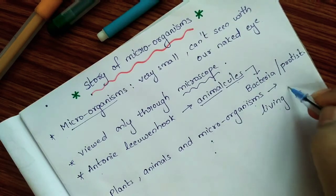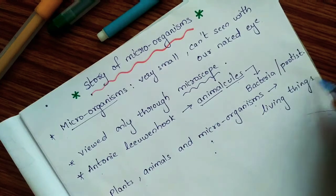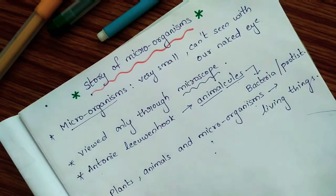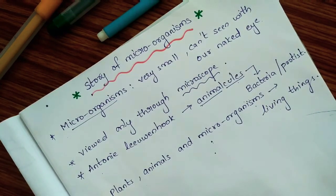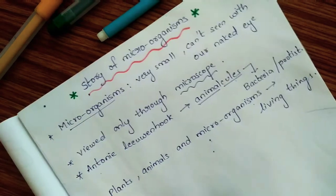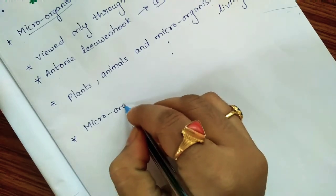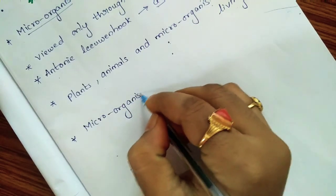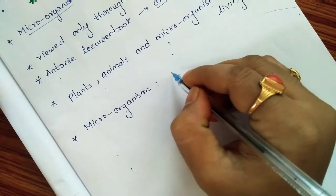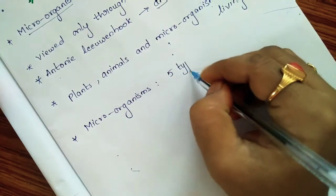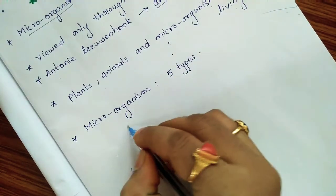Living things are now of three types, right? Even these microorganisms are of five types.